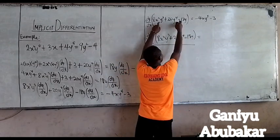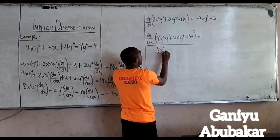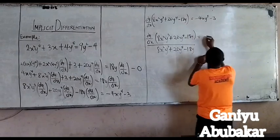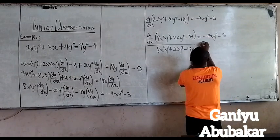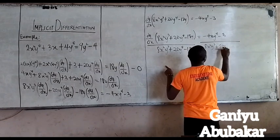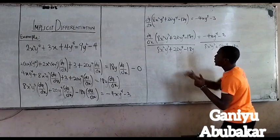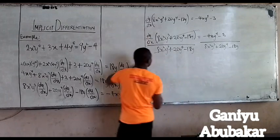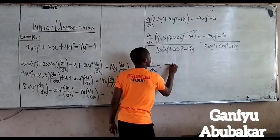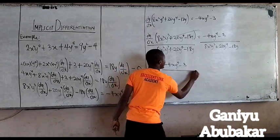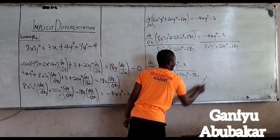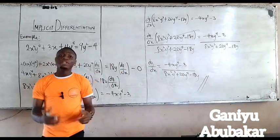So dy/dx is now equal to: minus 4XY to power 4 minus 3, all over 8X squared Y to power 3 plus 20Y to power 4 minus 18Y. The bracket cancels out and that is our answer after using the concept of implicit differentiation.